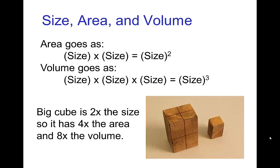The very important relation which determines many of the physical cues that distinguish size and scale is the relationship between area, volume, and size. The surface area of an object depends on the square of the size, and the volume depends on the cube of the size. The exact mathematical formula will depend on the geometric shape, but essentially these relations for area and volume hold regardless.